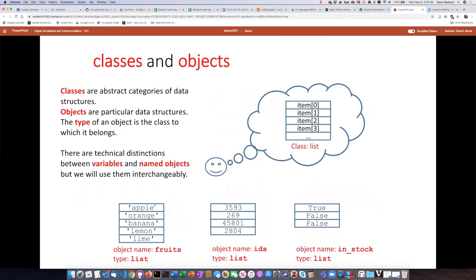In programming, when we talk about classes and objects, a class is essentially a category of data structure. So the list that we saw before is an idea of a particular kind of data structure, and then we can have particular instances or objects of that data structure. Down below you can see three different lists that I've created, and each of them are the same type of thing, a list, but they hold different kinds of things and have different numbers of items.